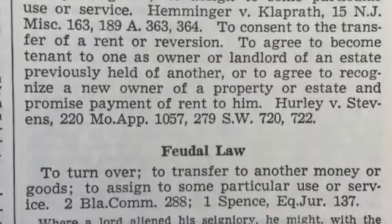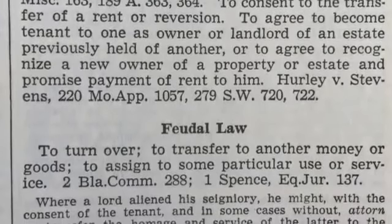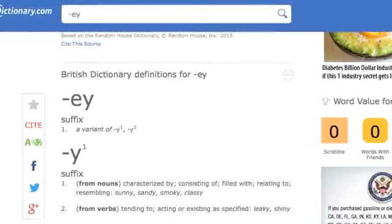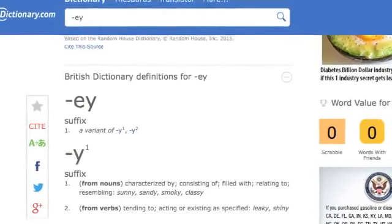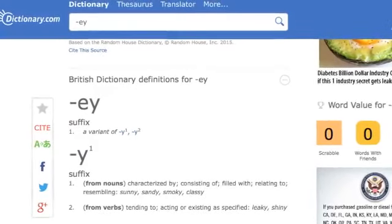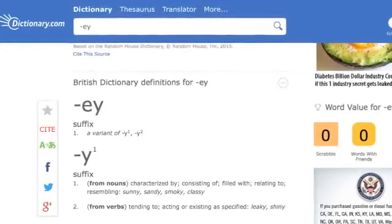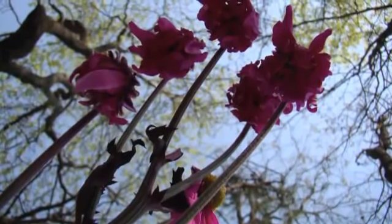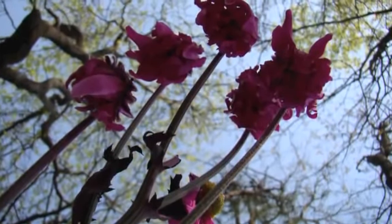That is what 'turn' means. Now let's look at the suffix -EY. From the British Dictionary, it's a variant of -Y. When applied to nouns, it means: characterized by, consisting of, filled with, relating to. So essentially, 'attorney' is characterized by and relating to turning over.